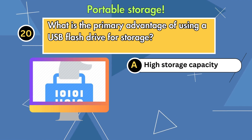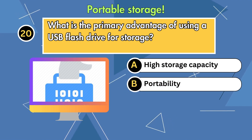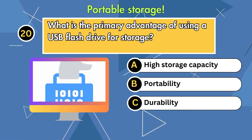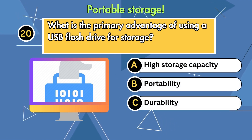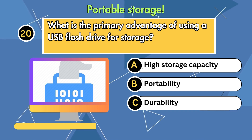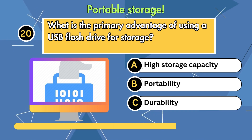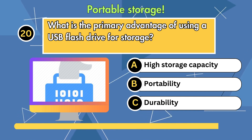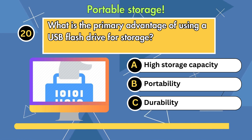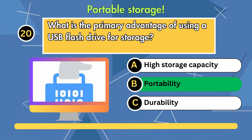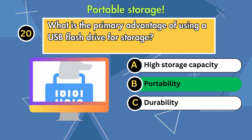Question 20. What is the primary advantage of using a USB flash drive for storage? Option 1: High storage capacity. Option 2: Portability. Option 3: Durability. Answer is portability.